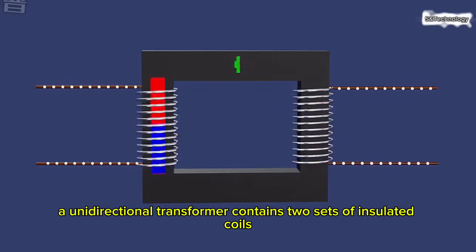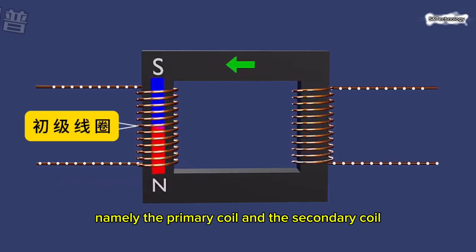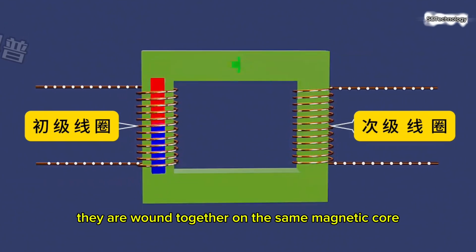A unidirectional transformer contains two sets of insulated coils, namely the primary coil and the secondary coil. They are wound together on the same magnetic core.